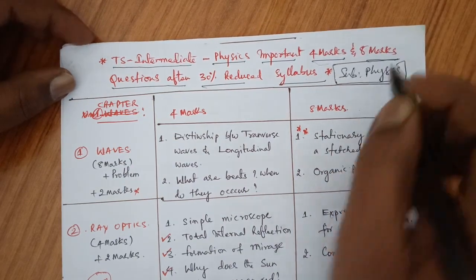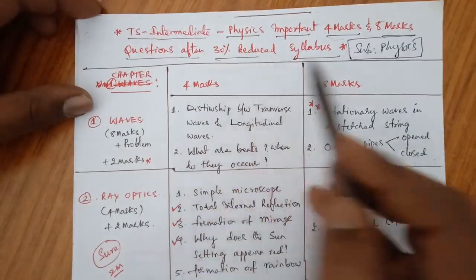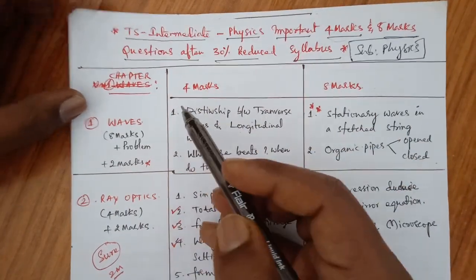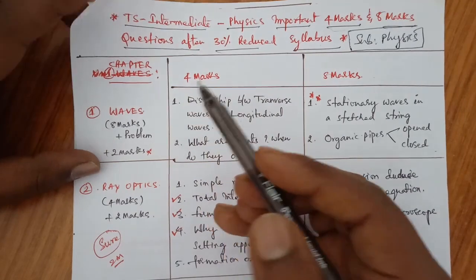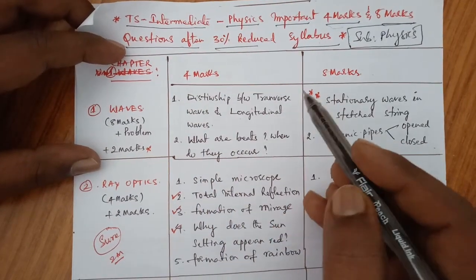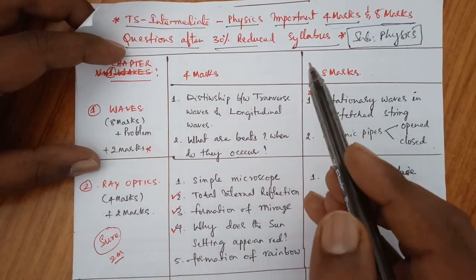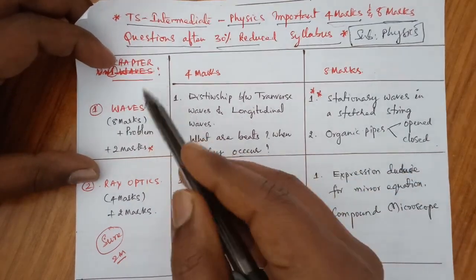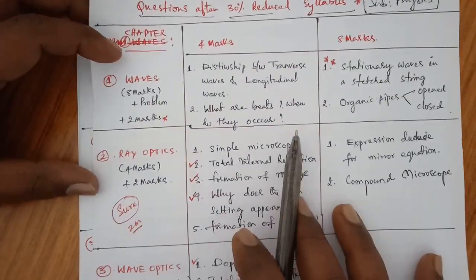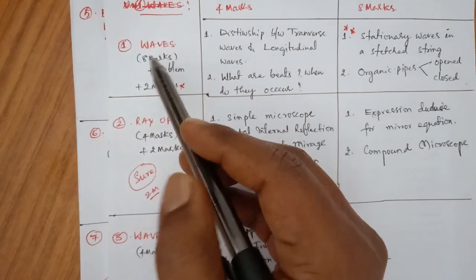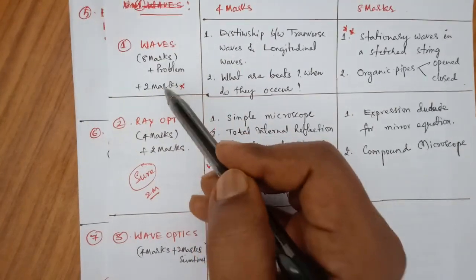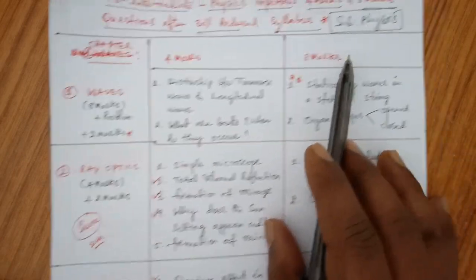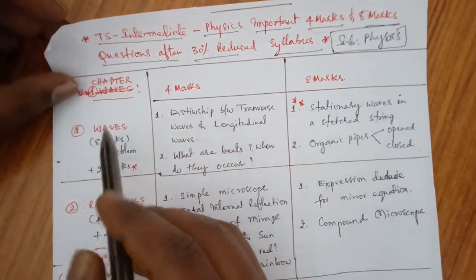We are going to cover the Telangana state syllabus — 16 chapters in total. In the last video, we looked at the 30% of MPC and BIPC topics that are deleted chapter-wise. Now let us see the chapter-wise important 4 marks and 8 marks questions from the new syllabus.